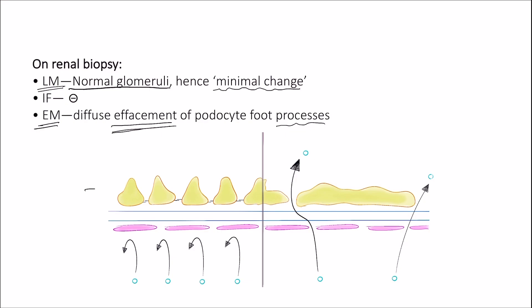On the left here we have the normal podocyte, and you can see that albumin cannot pass through the filtration barrier because it is repelled by the negative charges on the filtration barrier. On the right we have effacement of the podocyte, which is this swelling and apparent fusion of podocytes. This results in a leaky barrier that allows the passage of proteins into the urine. Immunofluorescence in minimal change disease is negative, meaning there are no immunoglobulins or complements.